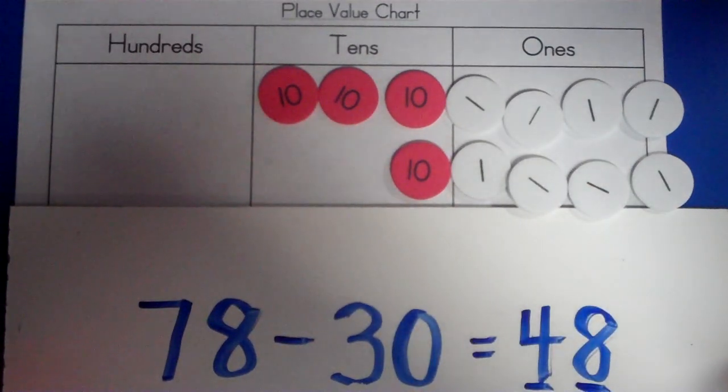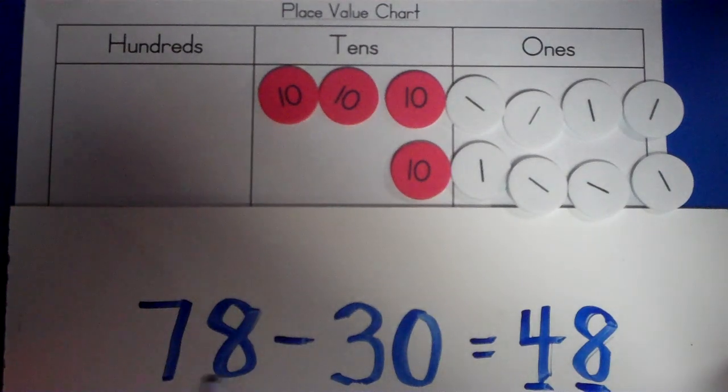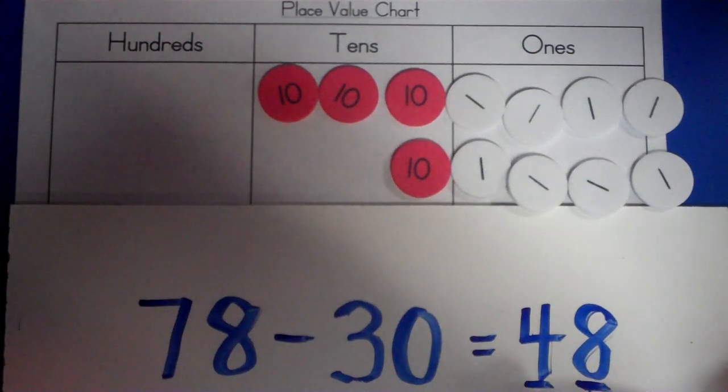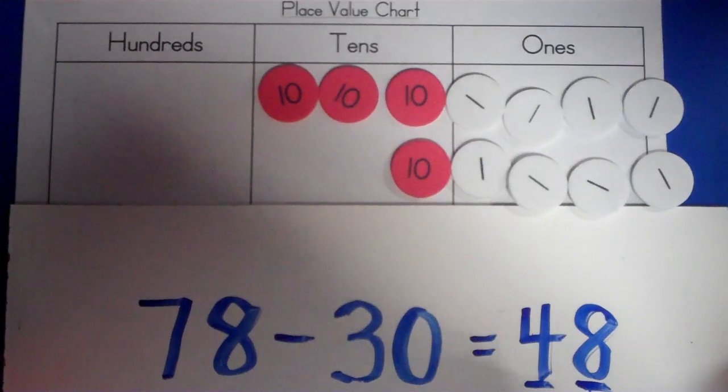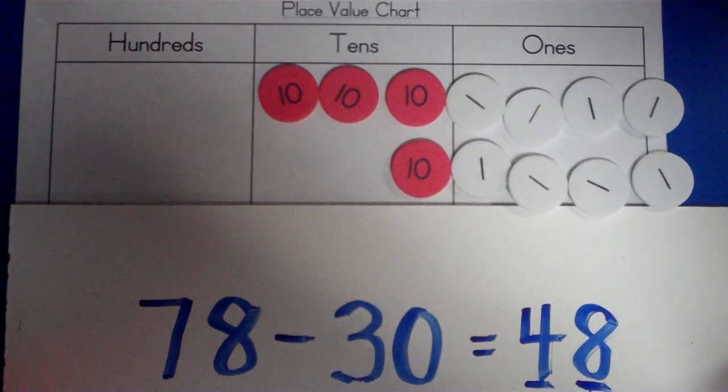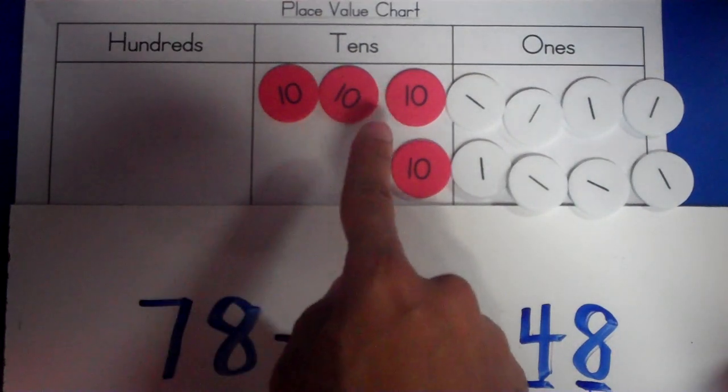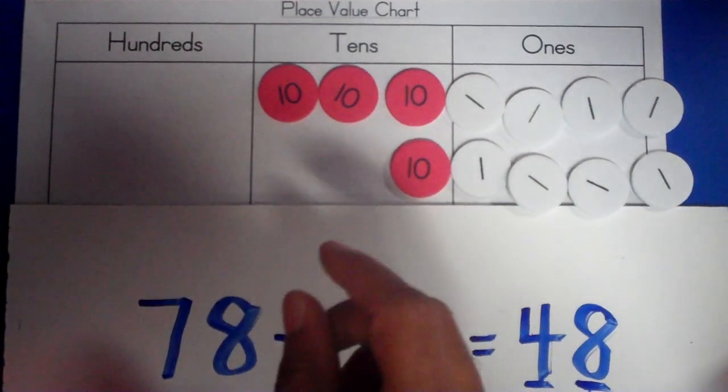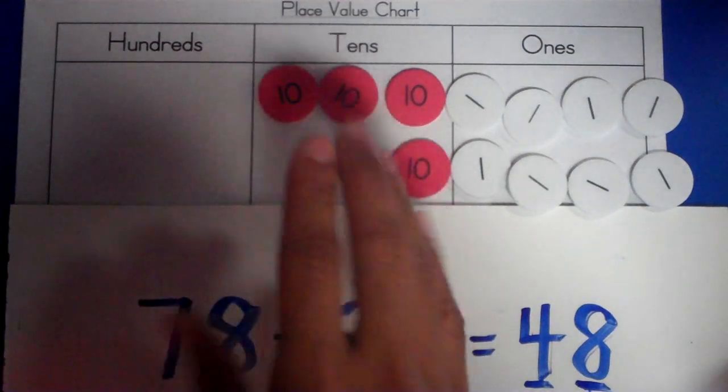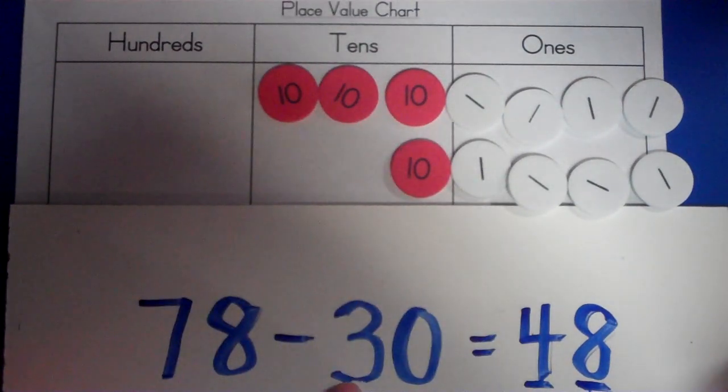You can use these number chips to solve this subtraction problem, but once you begin to use these number chips more often, you then can begin to form a picture in your mind of what this number will look like using these chips. So, then actually, in your mind, you can picture 78 and then take away three tens from the seven tens that you already have. So, then all you are really doing is looking at the tens place and taking away three tens from seven tens and your ones place will remain the same.